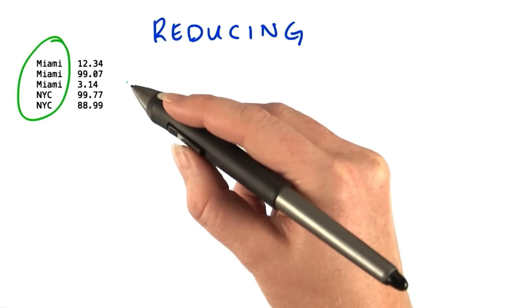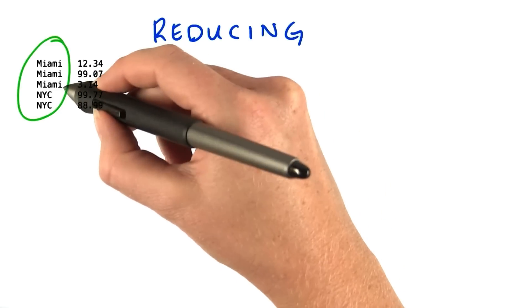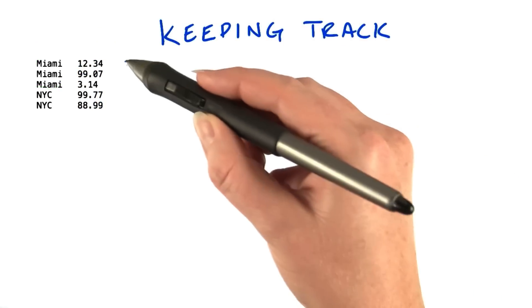So we know that all lines for, say, Miami, are together. So if we receive our data like this,